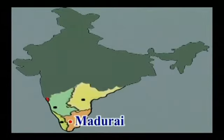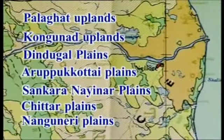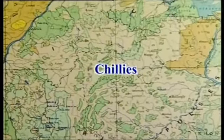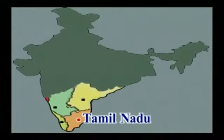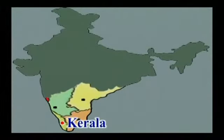The unirrigated croplands are one of the major land units in this zone, occurring over a vast area from Salem and Coimbatore to Madurai, going up to Nagercoil. They belong to the Palghât uplands, Kongunadu uplands, Dindigul plains, Aruppukottai plains, Sankaranainer plains, Chittar plains, and Nanguneri plains. In this vast zone, groundnut, sugarcane, chili, cotton, vegetables, gram, pulses, and rice are grown. Along the coastal regions of Tamil Nadu, coconut, gram, and tobacco are also grown. Kerala coast is known for coconut, fruits and vegetables, sesamum, and rubber.